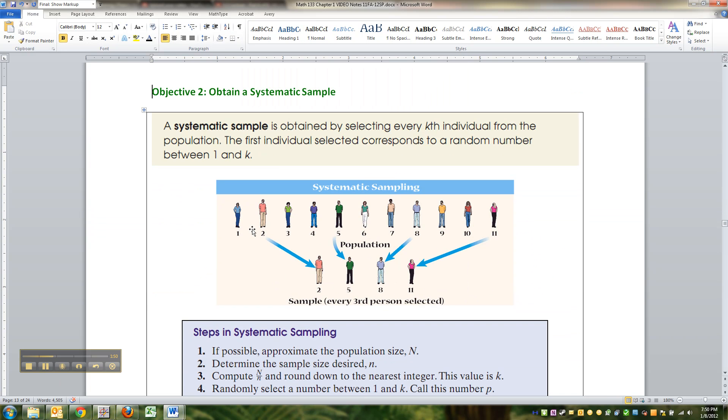All right, now what about a systematic sample? A systematic sample is when you obtain the kth individual from the population.